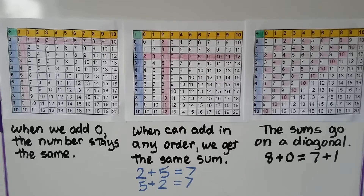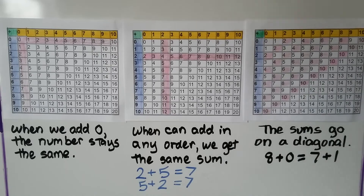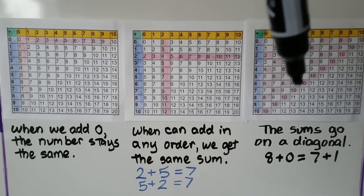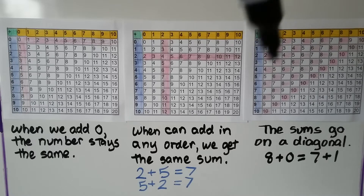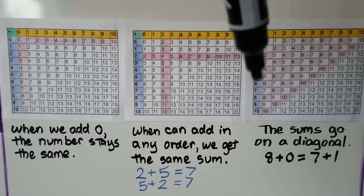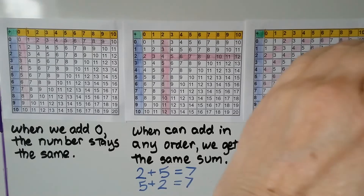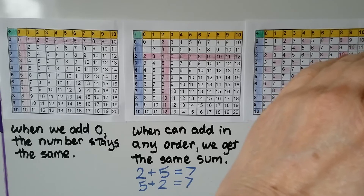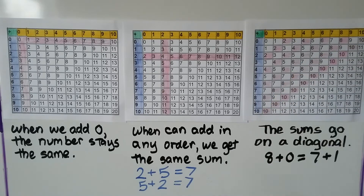The sums go on a diagonal for all of these that have the same sum. Here are the sums of 10 going on a diagonal, the sums of 8, the sums of 6, the sums of 4, and the sums of 2 — all colored in pink, making diagonals. And if you look at it this way, it's almost like it's making a checkerboard design, because every other one is colored pink.